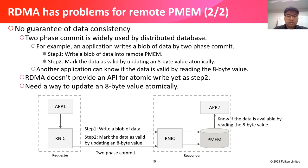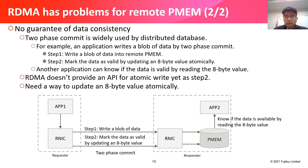The second problem is no guarantee of data consistency. Two-phase commit is widely used by distributed databases. For example, an application writes a blob of data by two-phase commit: Step 1 — write a blob of data; Step 2 — mark the data as valid by updating an 8-byte value. Another application can know if the data is valid by reading the 8-byte value. However, RDMA doesn't provide an API for atomic write as in Step 2, so we need a way to update an 8-byte value atomically.